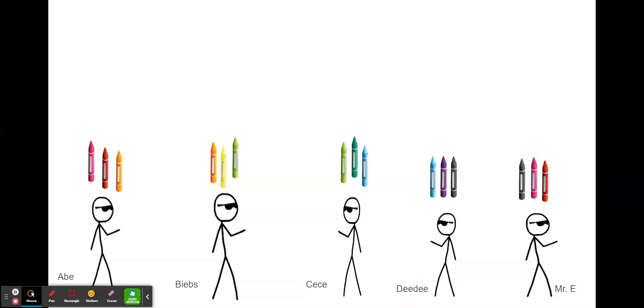Then what they have to do is they need to make a decision about how many to donate. So let's make a donation. You can see here that Abe and Cece and Dee Dee each decided to donate one of their crayons. Mr. E decided to give away two, and the Biebs kept all those crayons for himself.